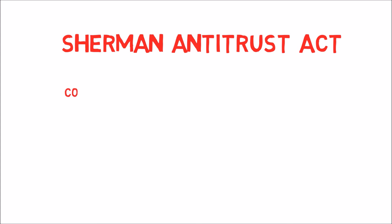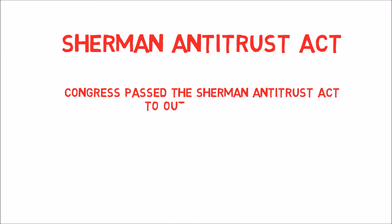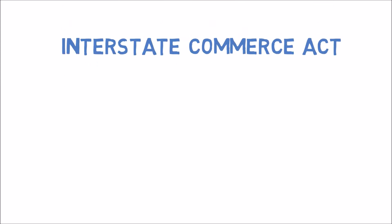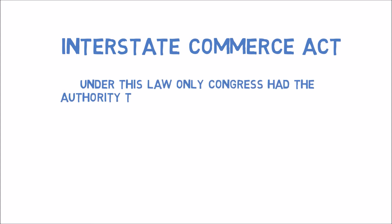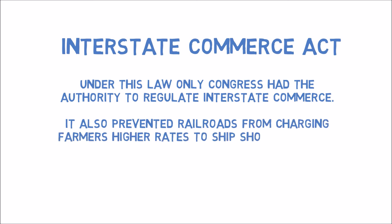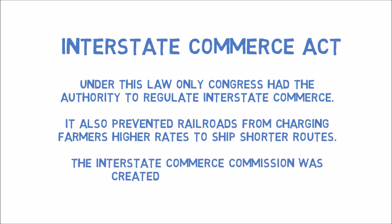Congress passed the Sherman Antitrust Act to outlaw trusts, making it illegal to form trusts. The Interstate Commerce Act gave only Congress the authority to regulate interstate commerce. It also prevented railroads from charging farmers high rates to ship shorter routes. The Interstate Commerce Commission was created to enforce the act.